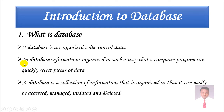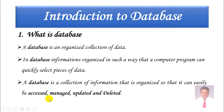In a database, information is organized in such a way that a computer program can quickly select a piece of data. Just like in a library, whenever you are in need of a book, you can directly find it and pick it. Likewise, in a database, information is organized so that the computer can quickly access or retrieve data as required. A database is a collection of information that is organized so that it can be easily accessed, managed, updated, and deleted.